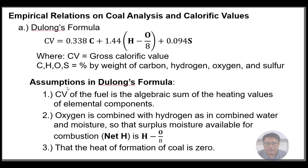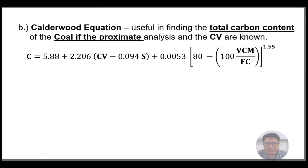Assumptions in Dulong's formula: (1) The calorific value of fuel is the algebraic sum of the heating values of its elemental components. (2) Oxygen is combined with hydrogen as in combined water and moisture, so the surplus hydrogen available for combustion — net hydrogen — is H minus O/8. (3) The heat of formation of coal is zero.